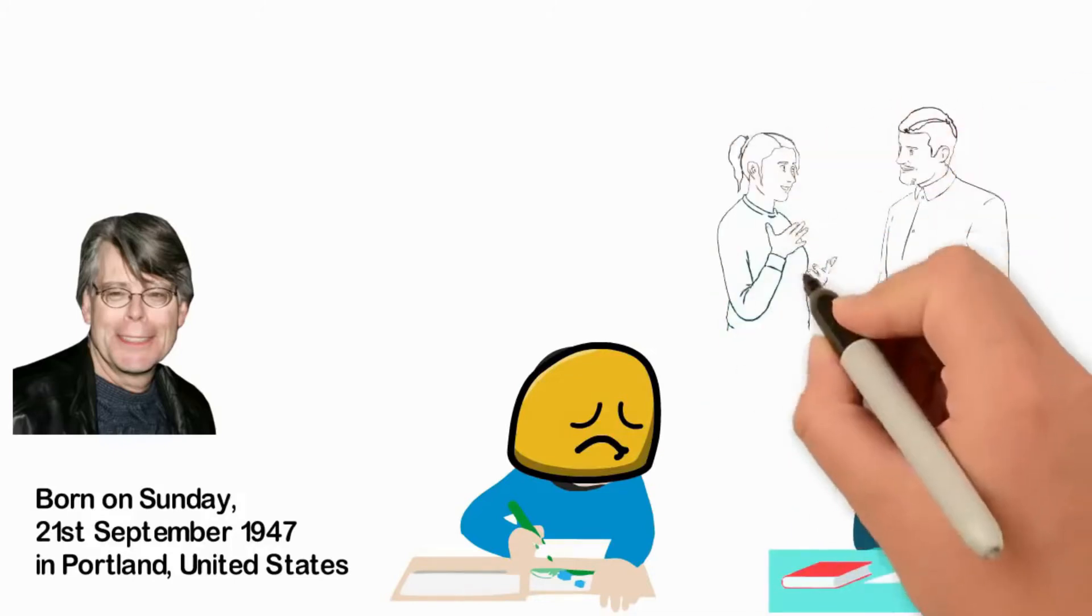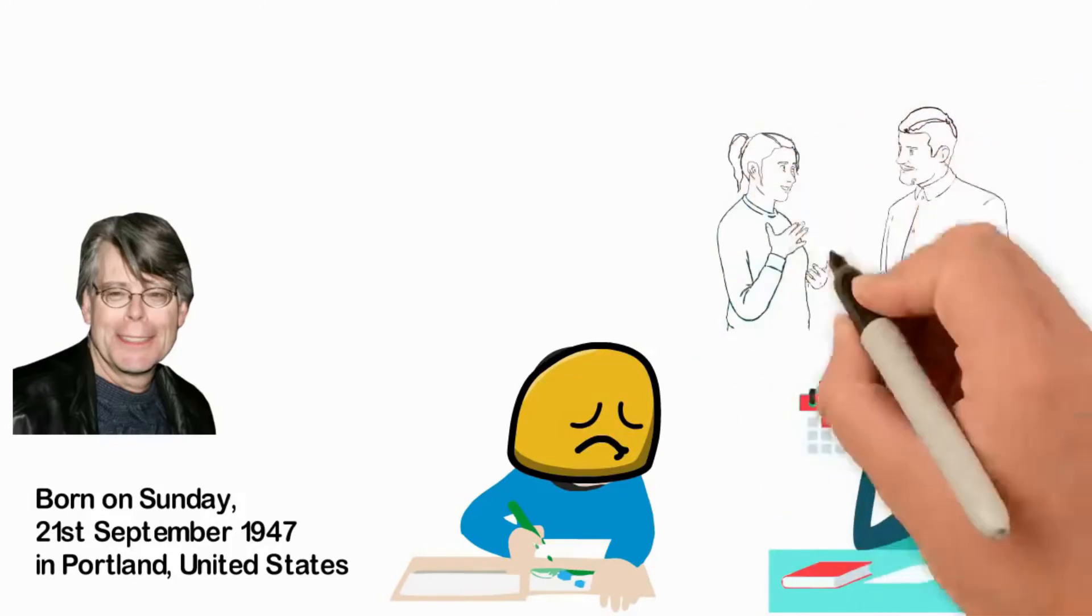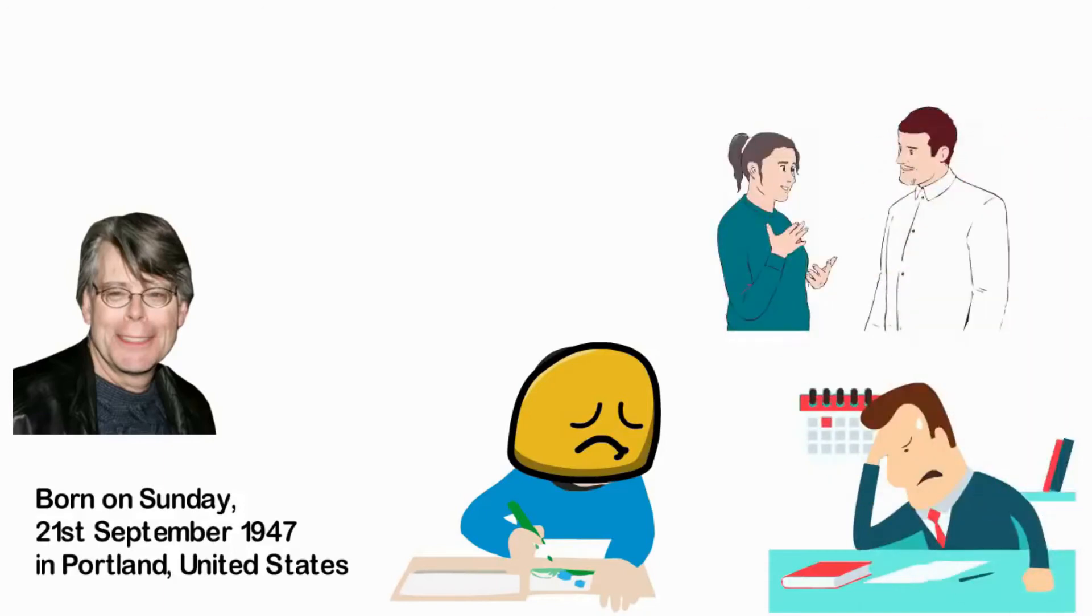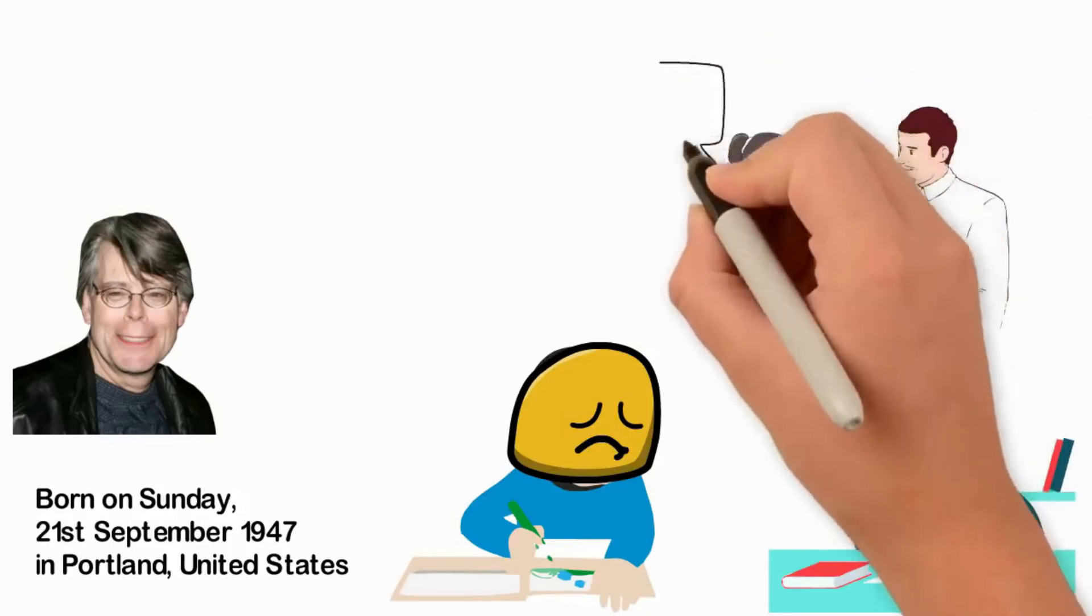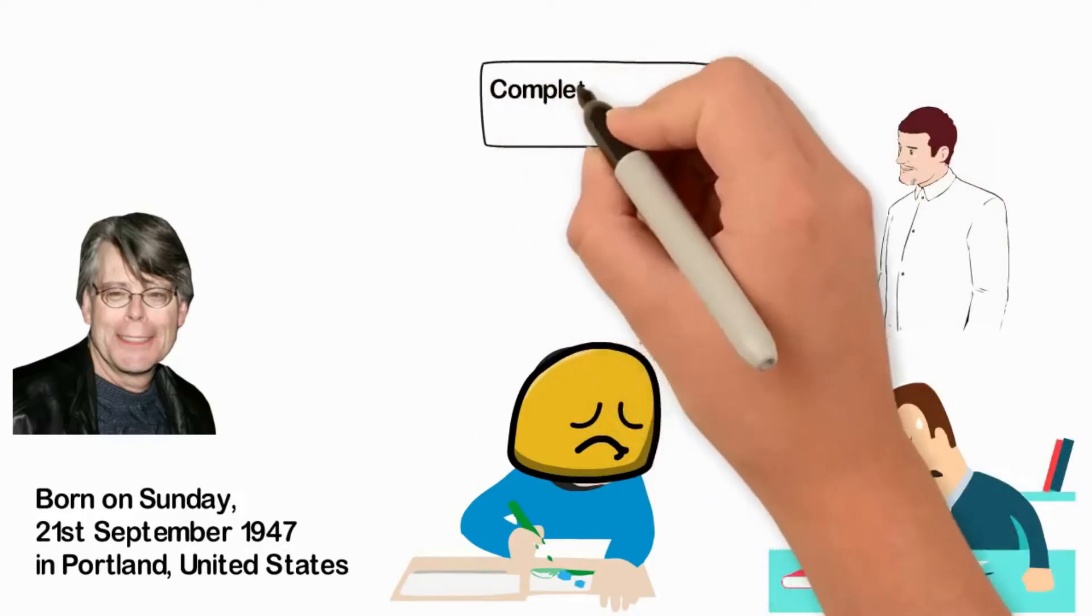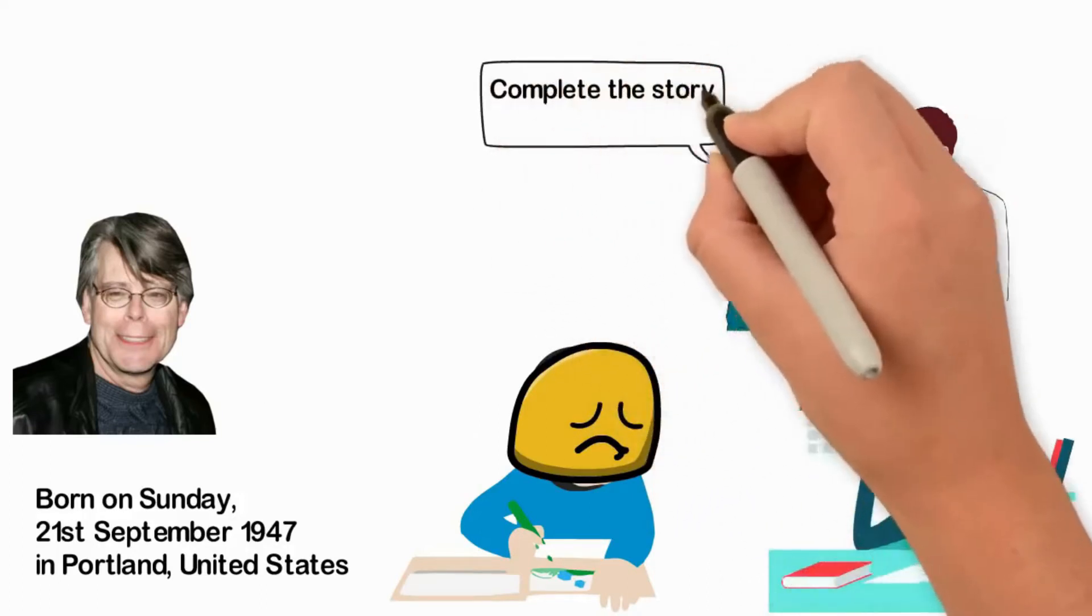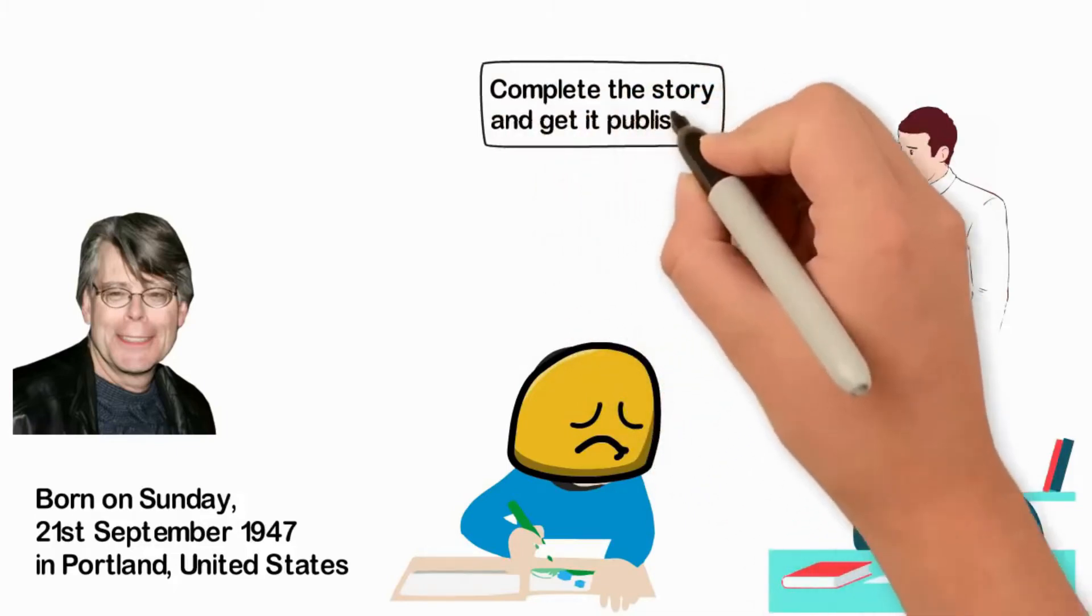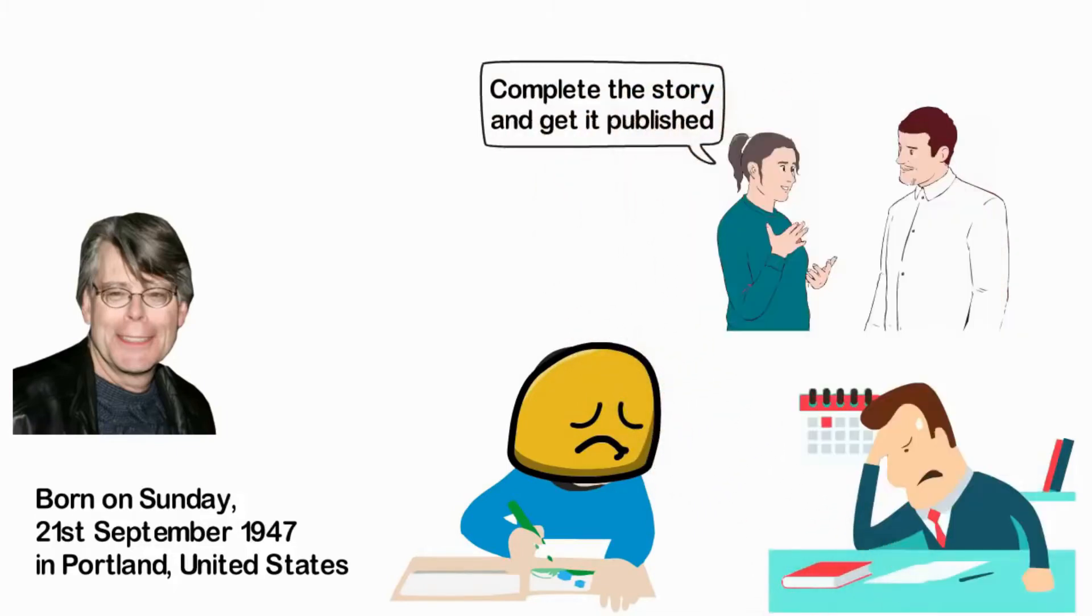After all, this is a man who had written three books without any success. Stephen King trashed the short story he had just written and went out to his day job but his wife, Tabitha, had a better idea. She believes there's no harm in trying and she convinced her husband to complete the story of Carietta and get it published.